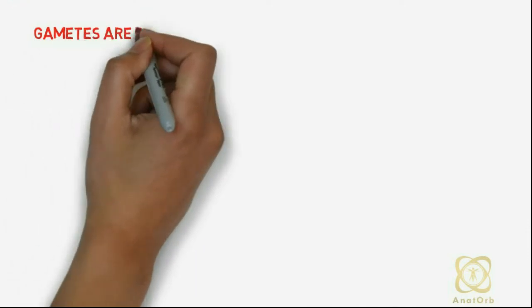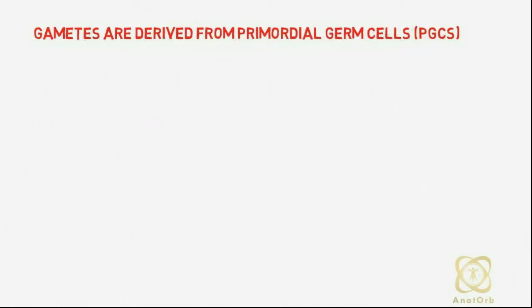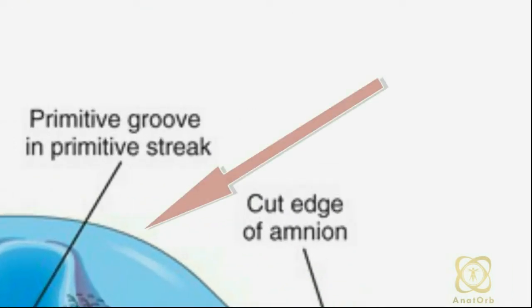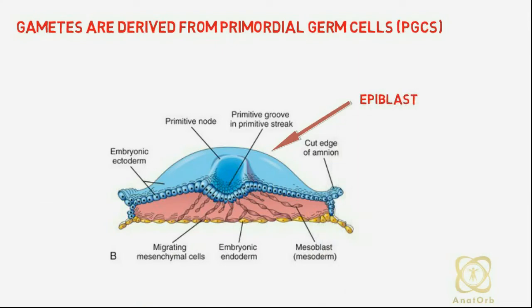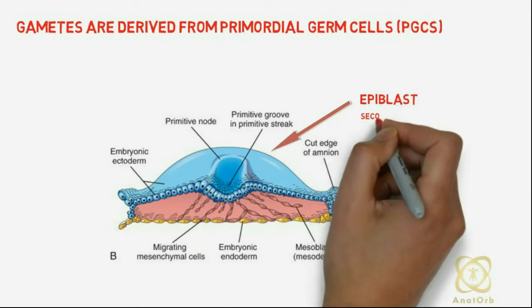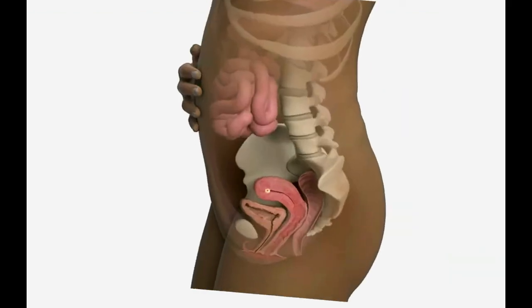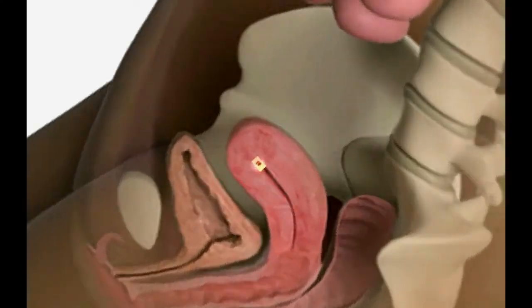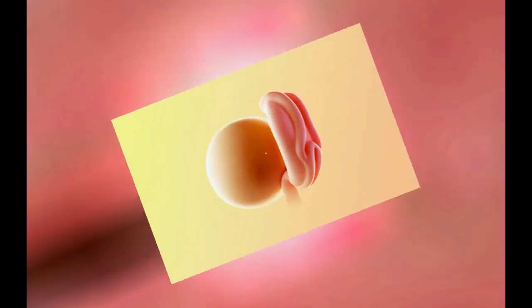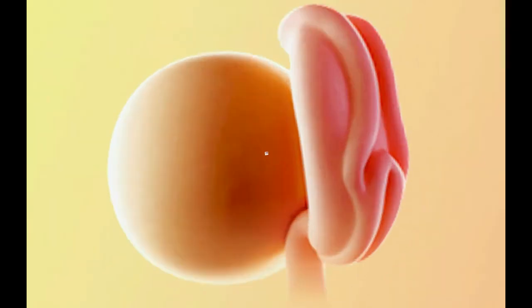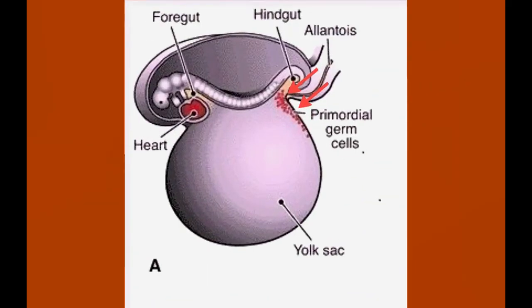Gametes are derived from primordial germ cells, which are formed in the epiblast during the second week of development. At the beginning of the third week, primordial germ cells begin to appear among endoderm cells in the wall of the yolk sac.